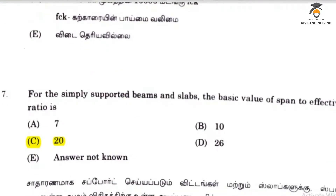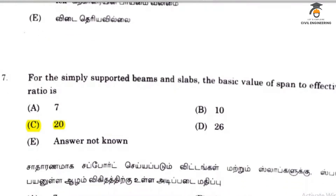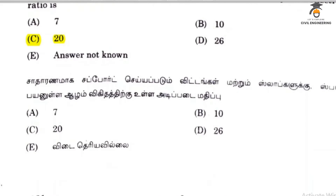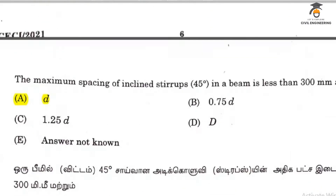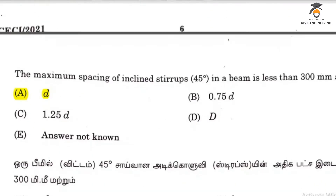For a simply supported beam and slab, the basic value of span to effective depth is 20 as per IS-456. The maximum spacing of inclined stirrups in a beam is less than 300 mm, related to the diameter of the stirrups and the depth.